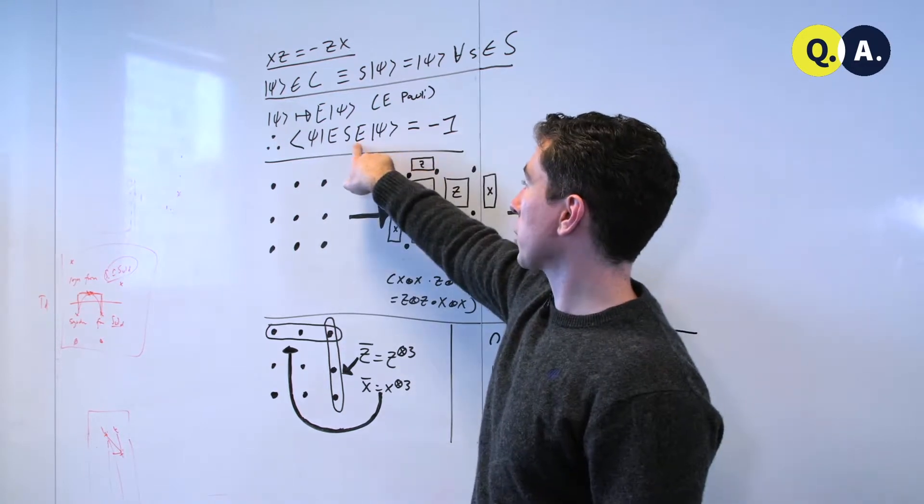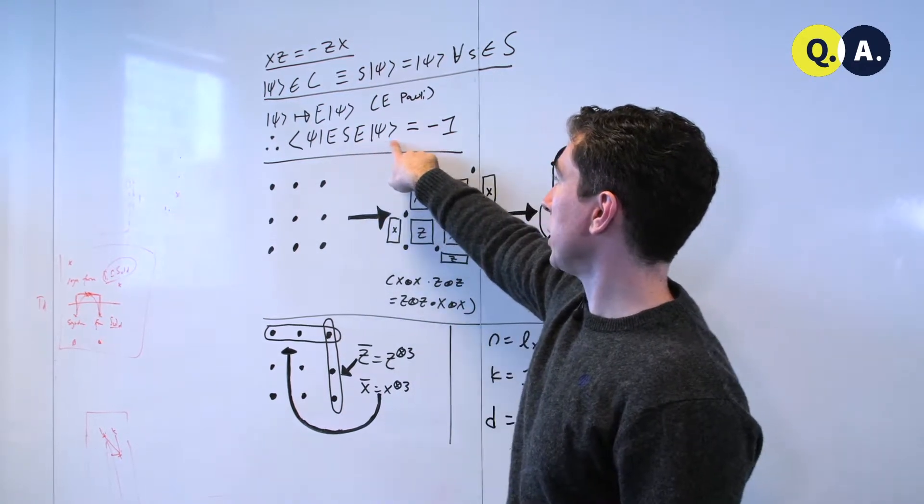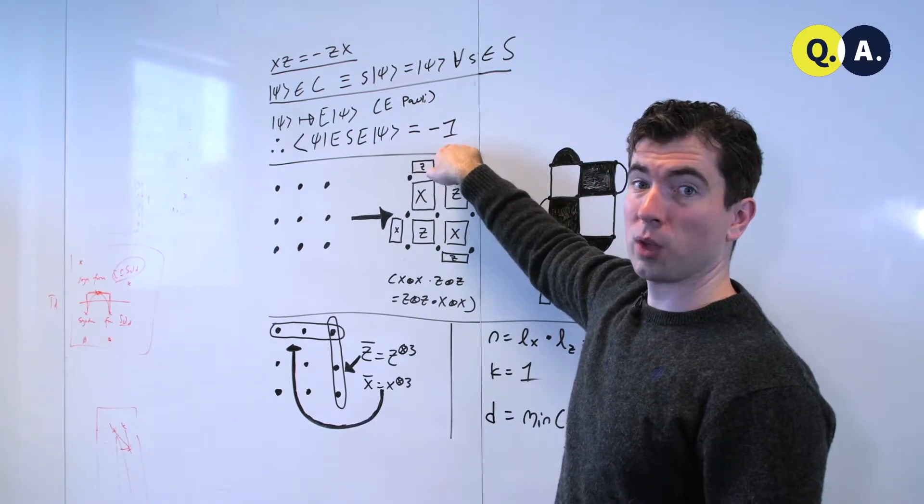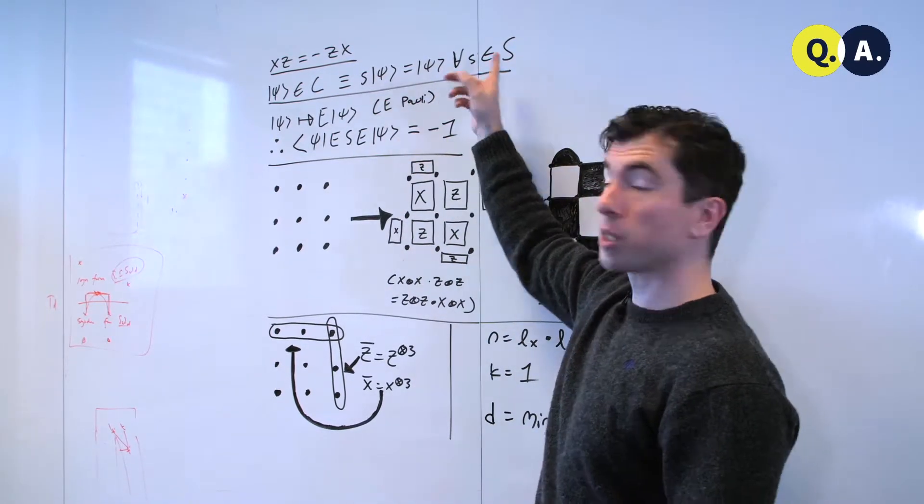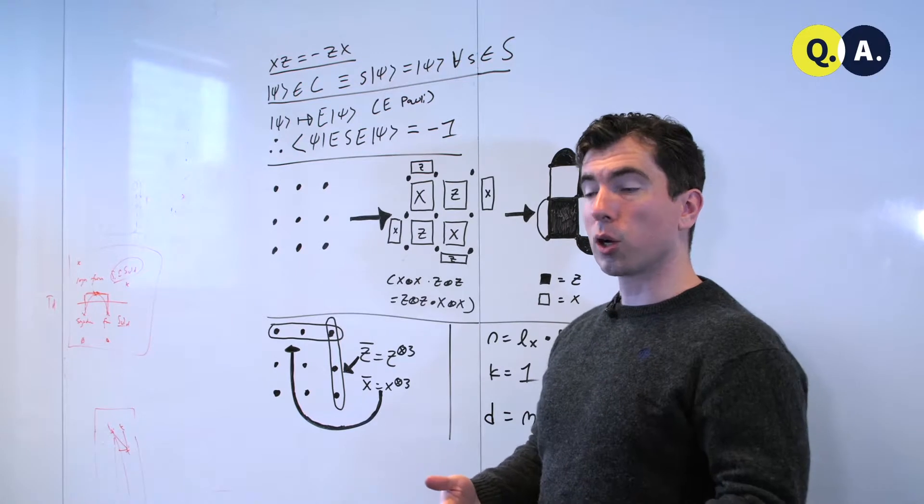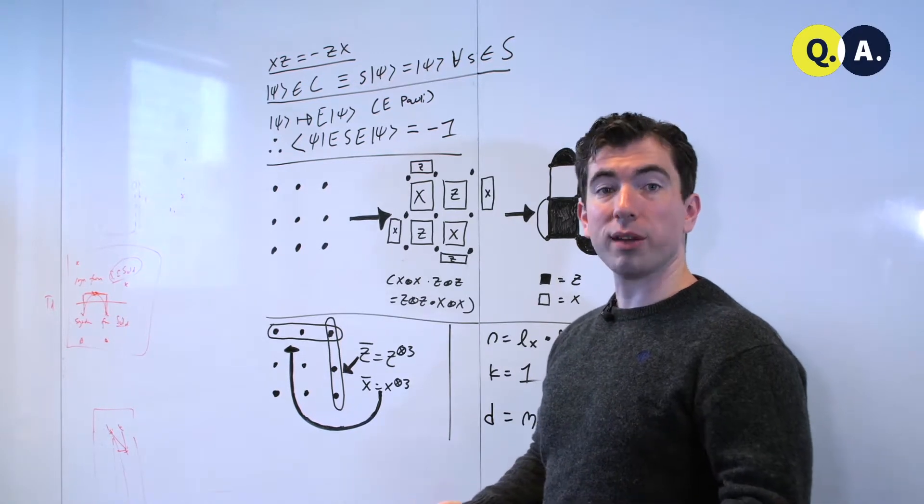Now if this error had not occurred, not producing the state e psi, but rather psi, this would be plus 1. And this means that as long as we're working with a stabilizer code, errors are going to have a physically measurable effect on the system.